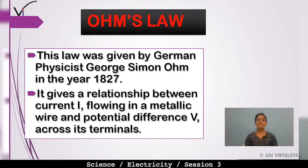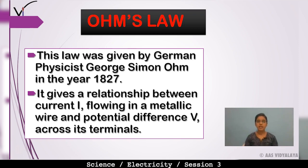Now our second topic for this session is Ohm's law. This law was given by German physicist George Simon Ohm in the year 1827. Ohm's law gives the relationship between current flowing through a metallic wire and the potential difference V across its terminals.